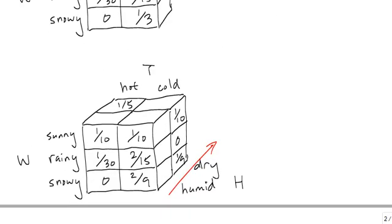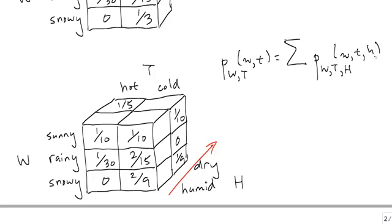The basic idea is still the same in terms of formulas. We have probability of W, T, the joint probability table for W and T, the value of these entries, is equal to the summation of the joint probability table for W, T, and H, where we're summing out the humidity. And this is just dry and humid as the two options.